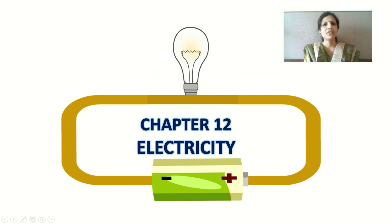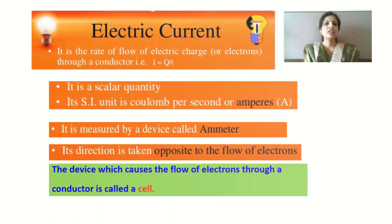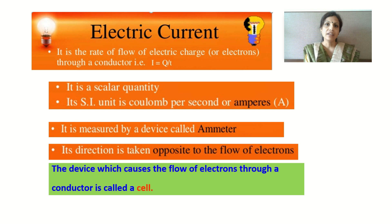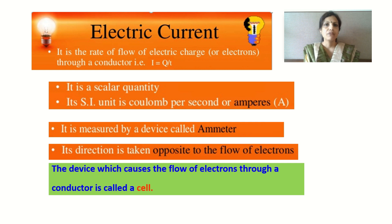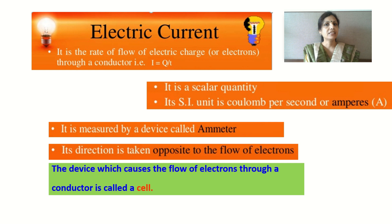Hello children. In the previous video lesson we started with chapter number 12 Electricity and we discussed about what is an electric current. Electric current is the flow of electric charge and electrons in an atom are the charge carriers. Electrons carry negative charge and they are responsible to carry electricity through the conductor. This electric current is given by the formula I = Q/T, where I is electric current, Q is the charge and T is the time. The electric current is a scalar quantity and its SI unit is ampere, denoted by the letter capital A.